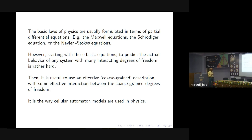In terms of partial differential equations like the Maxwell equation, the Schrodinger equation, the Navier-Stokes equations. However, starting with these basic equations to predict the actual behavior of any system with many degrees of freedom is rather hard. Then it is useful to have an effective coarse-grained description in which some effective interaction between these coarse-grained degrees of freedom. So the objects which we discuss are not elementary particles. They are some kinds of groups of particles or agents or grains of sand or some such thing. And we think of them as a single degree of freedom. So this is the way cellular automaton models are used in physics in general.